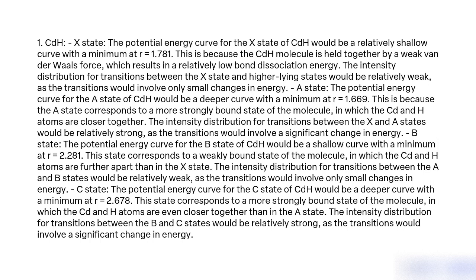CDH C state: The potential energy curve for the C state of CDH would be a deeper curve with a minimum at R equal to 2.678. This state corresponds to a more strongly bound state of the molecule in which the CD and H atoms are even closer together than in the A state. The intensity distribution for transitions between the B and C states would be relatively strong, as the transitions would involve a significant change in energy.